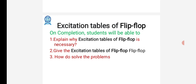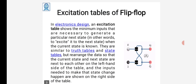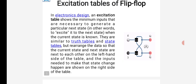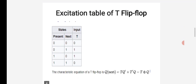An excitation table shows the minimum inputs necessary to generate a particular next state when the current state is known. They are similar to truth tables and state tables, but rearranged so that the current state and next state are on the left-hand side of the table, and the inputs needed to make that state change are shown on the right side.